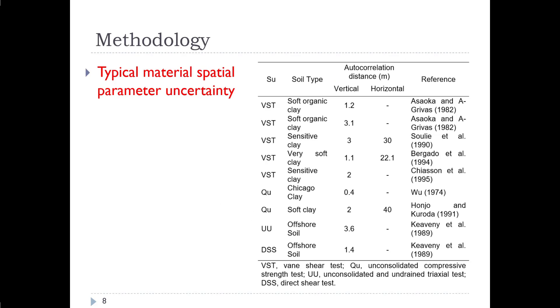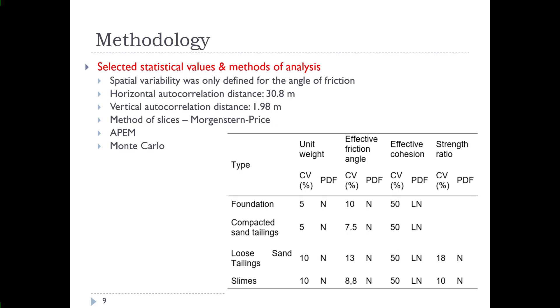And typical material spatial parameter uncertainty for undrained materials is shown here, and the reference as well is given for these materials. So certain properties were adopted here which are shown in this table for the different materials involved in the cross section, and coefficients of variation and the probability density function was used as shown here. And the spatial variability was only defined for the angle of friction, just one of the restrictions of the study.